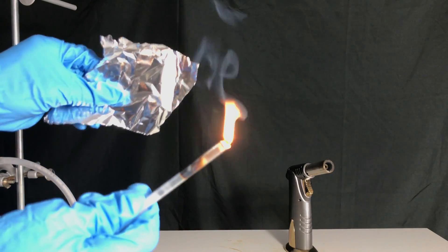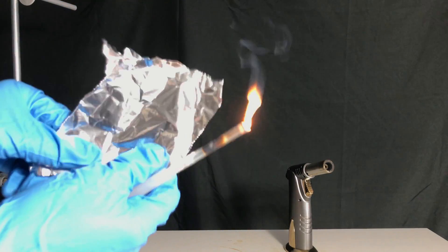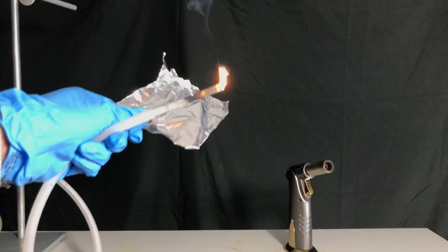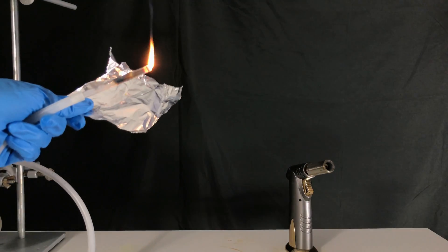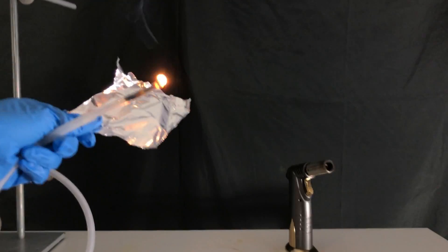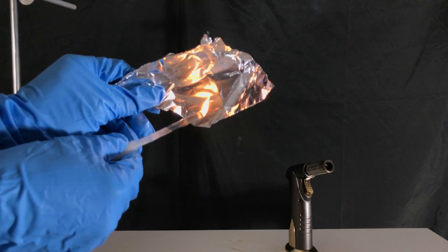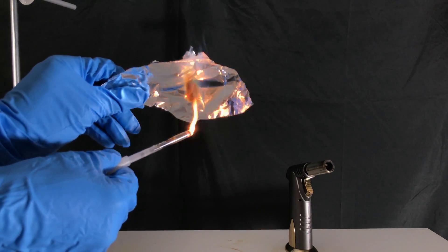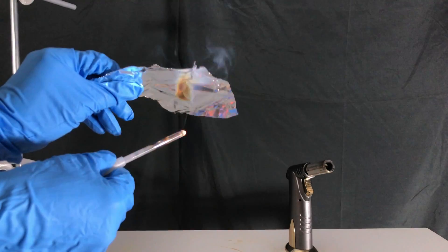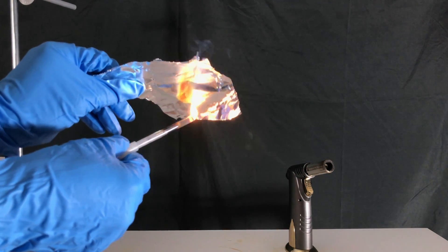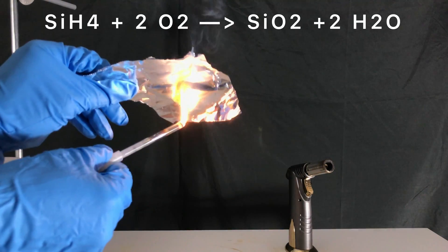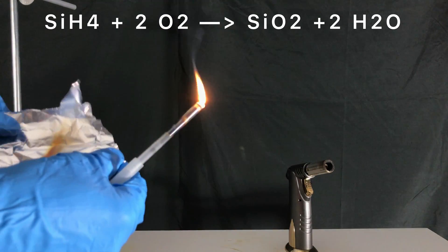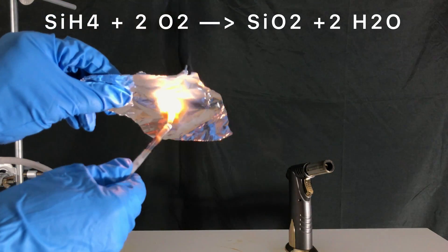To make the sand that is formed even more visible, I took a piece of aluminum foil and just held it to our silane flame. The whitish and brown stuff that settled on the aluminum foil is silicon dioxide.